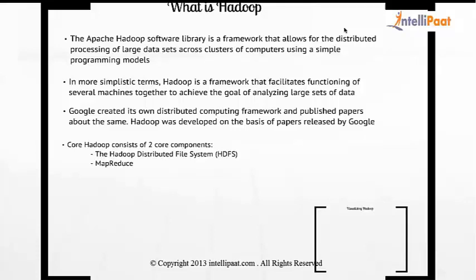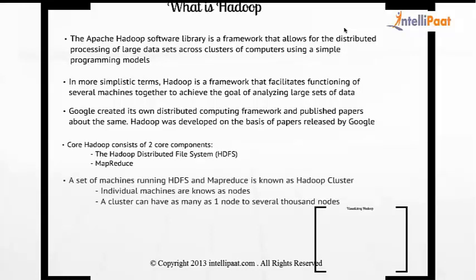Hadoop consists of two core components: one is HDFS — the Hadoop Distributed File System — and the other one is MapReduce. A set of machines running HDFS and MapReduce is known as a Hadoop cluster. Individual machines are known as nodes, and a cluster can have as few as one node and as many as several thousand nodes.